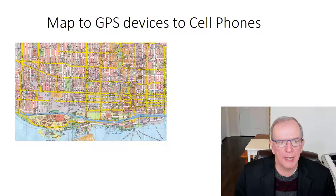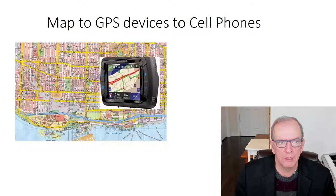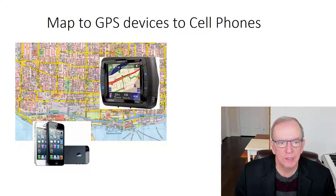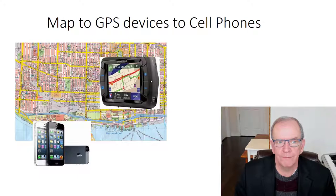Maps — every construction worker always had a map book in their truck. We used to call them 'pearlies' after the company that made them. The problem, especially in construction where you're building new subdivisions and streets, is they become outdated every year. Then GPS started to take hold, but the technology changed so fast. Why would you want a standalone GPS when you can use your cell phone? GPS units required map updates every two or three years for an extra fee, whereas your cell phone updates essentially daily.